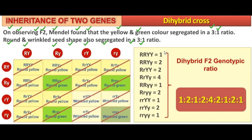The fully dominant organism — out of all the round and yellow offspring, there are 9 in total that are round and yellow, and 1 is fully homozygous dominant. For the genotype capital R capital R, capital Y capital Y, there are 2 offsprings. Then capital R small r, capital Y small y — there are 2 organisms of this type.